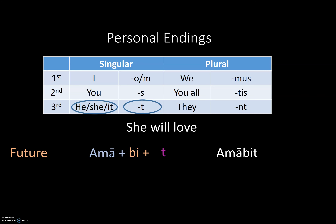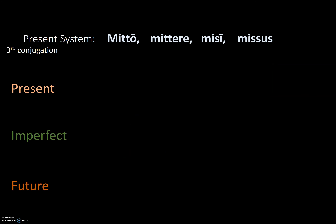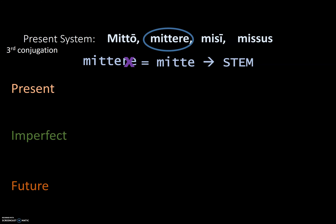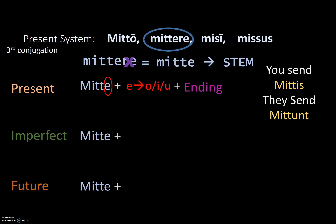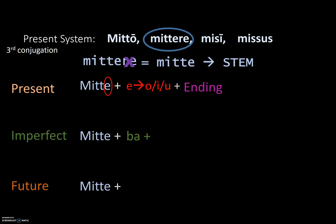Third, third-IO, and fourth conjugation verbs behave slightly differently. We still go to the second principal part, drop the RE, and get the stem — for example, MITTE. In the present tense, the short E changes to O in the first person singular, I for most other persons, and U in the third person plural. So we get forms like MITTIS (you send) or MITTUNT (they send). For the imperfect, we still take the stem, add BA, and add the ending — for example, MITTEBAMUS (we were sending).